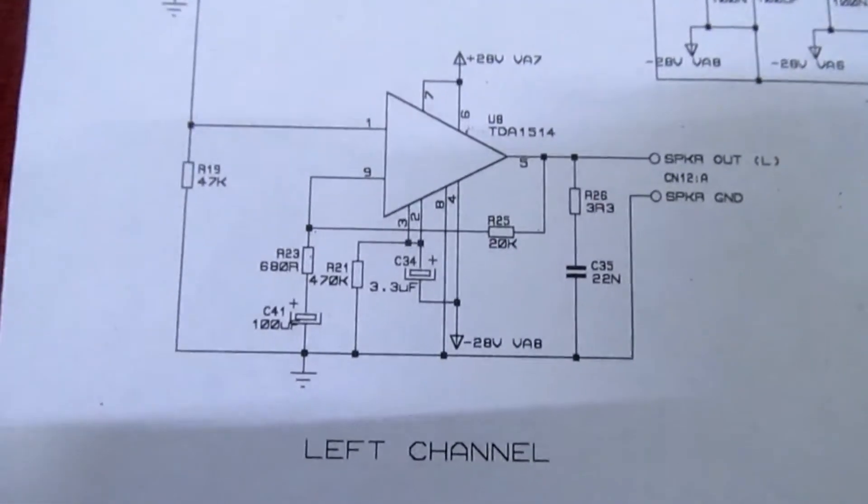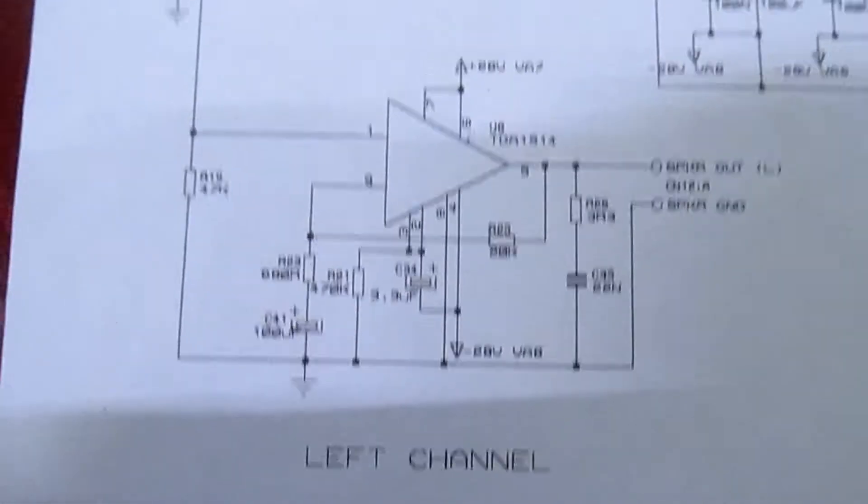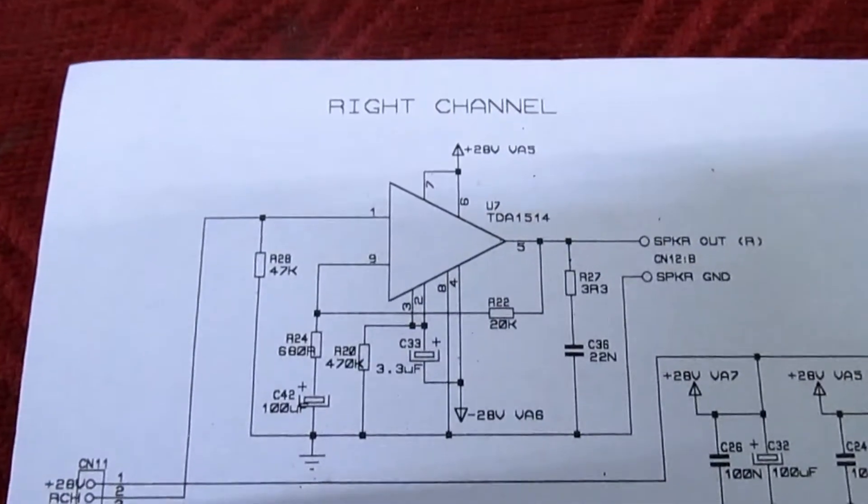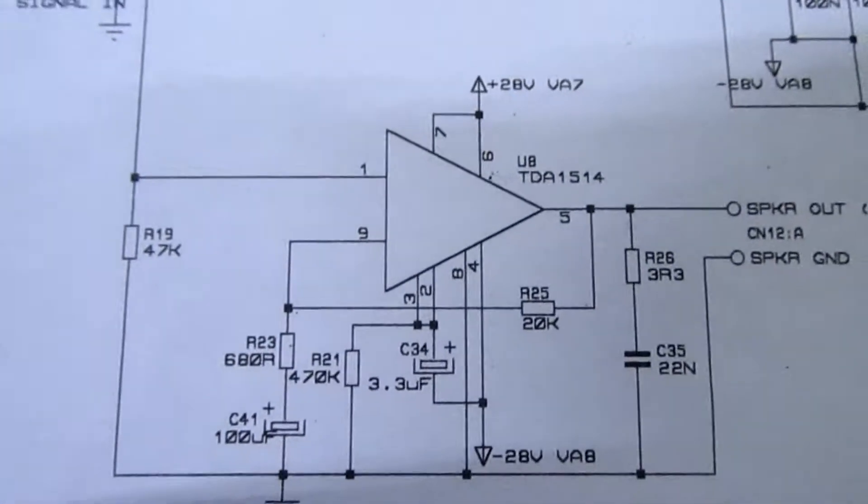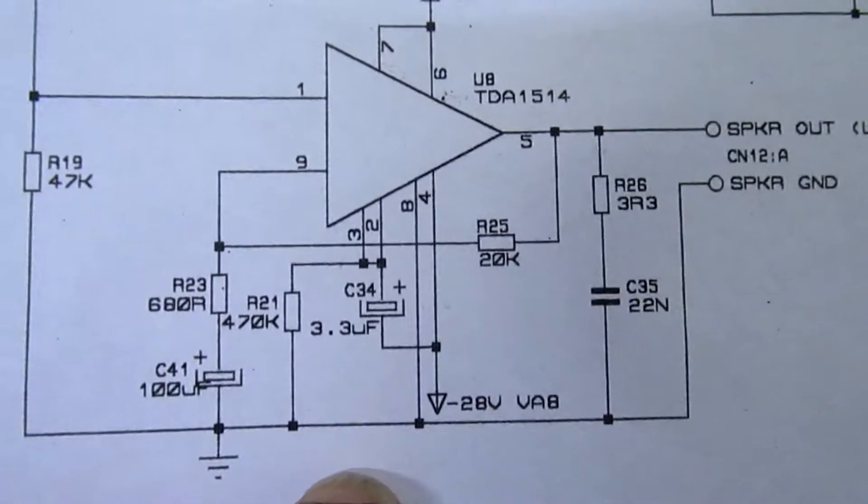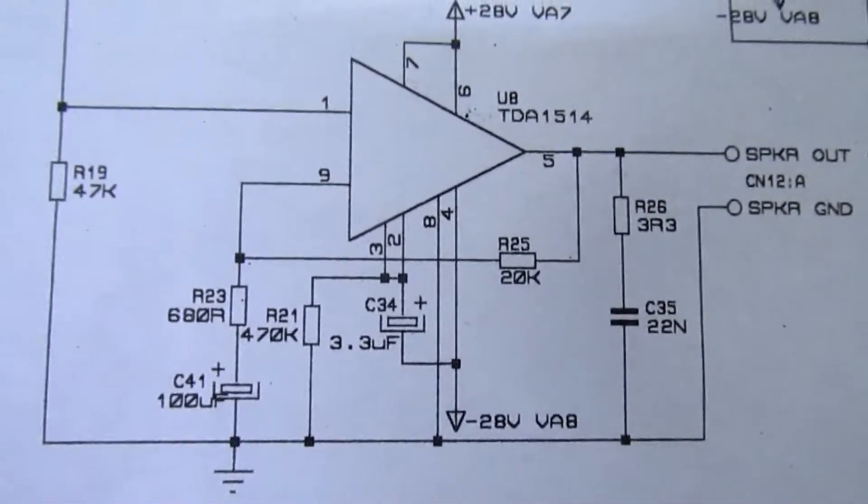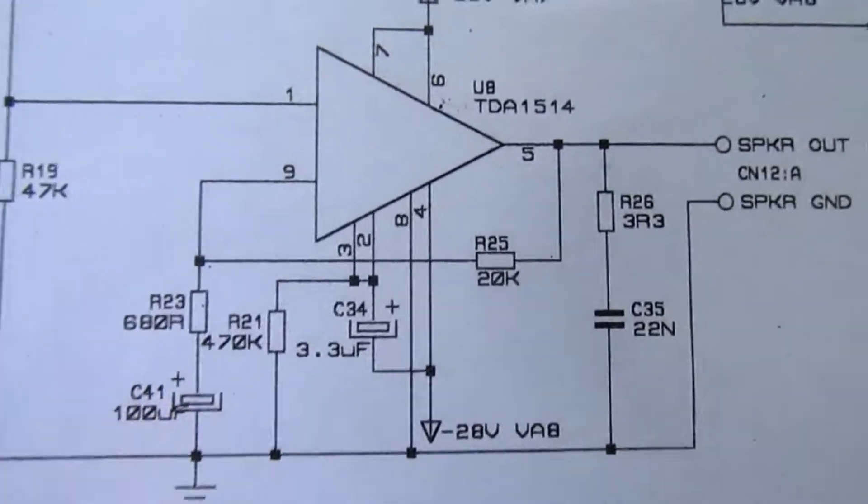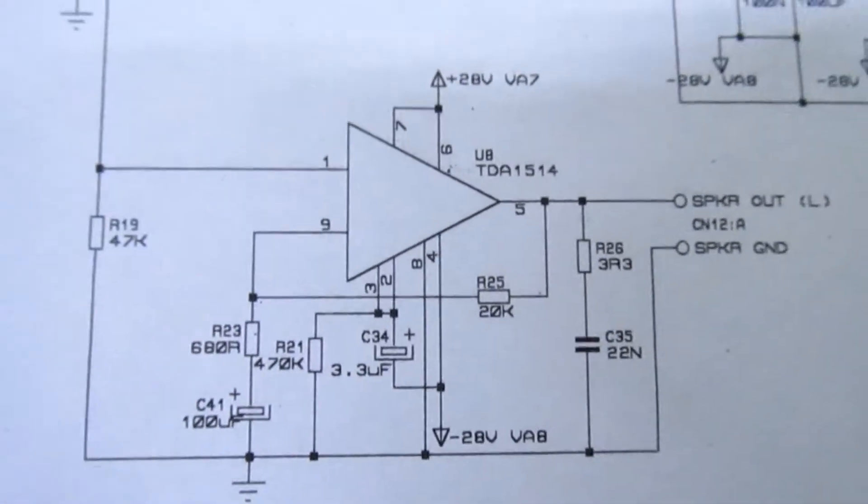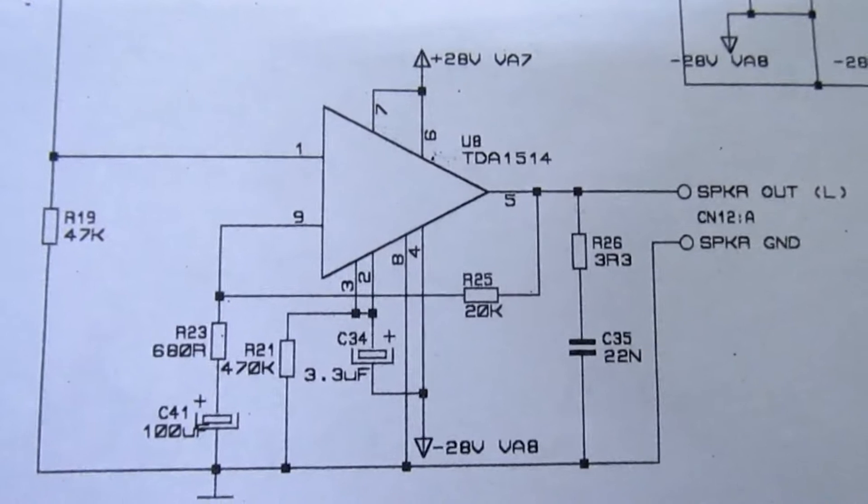If we look here at the circuit diagram for the Cambridge A1 audio amplifier, the actual left and right channels are ridiculously simple, consisting of the TDA1541 and just a handful of parts around it. It shouldn't be too difficult substituting that IC with a different one that's in modern production.